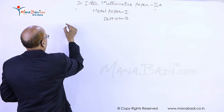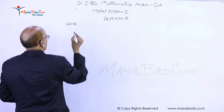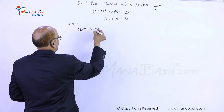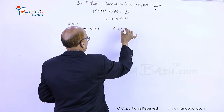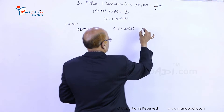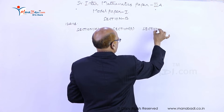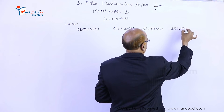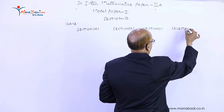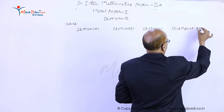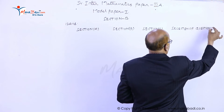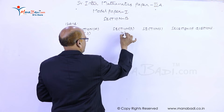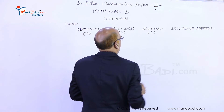Now question 13. I'll write all the sections: section A, section B, and section C. In section A there are three questions, section B has four questions, and section C has five questions. We need to find how many ways we should select the questions.